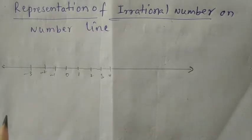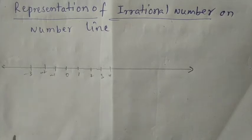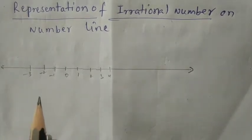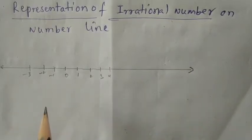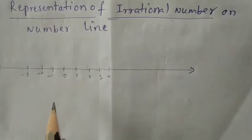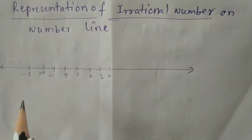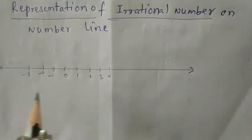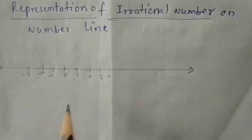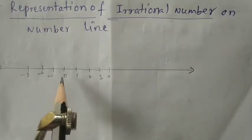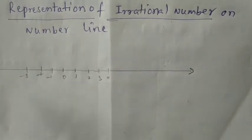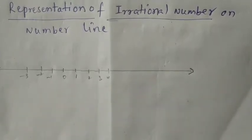In the previous class, we already learned how to represent integers and rational numbers on the real line. The real line is a straight line with numbers marked on it: 0 in the center, minus 1, minus 2, minus 3 on the left side, and 1, 2, 3, 4 and so on on the right side. This is the real line.